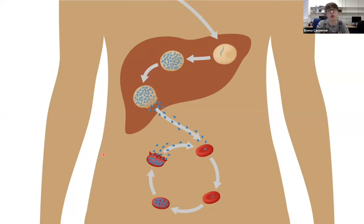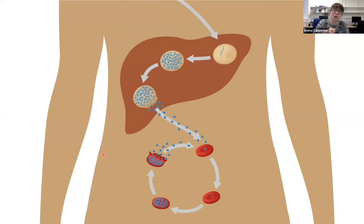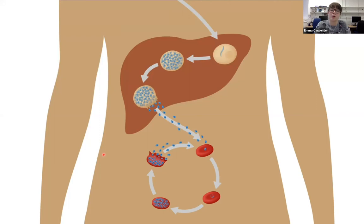The blood-stage cycle takes about 48 hours, which explains the periodic fevers and chills characteristic of malaria. Every 48 hours there is a massive release of parasites into the bloodstream; the immune system panics and produces a fever, which dies down, and then another fever spike follows. This cycling is responsible for making patients feel extremely unwell.